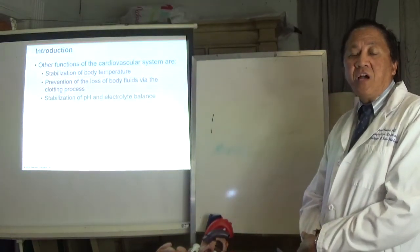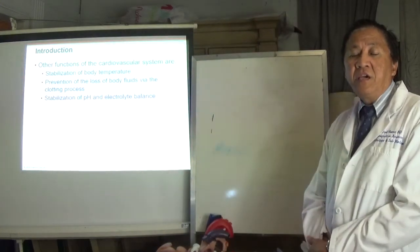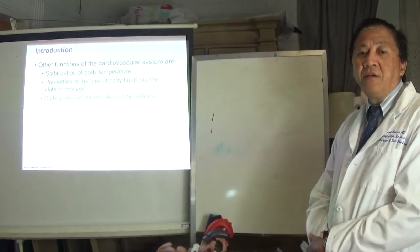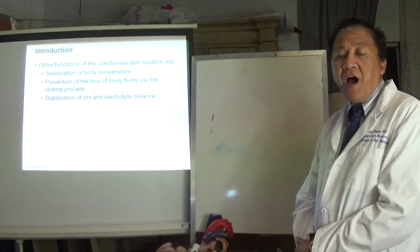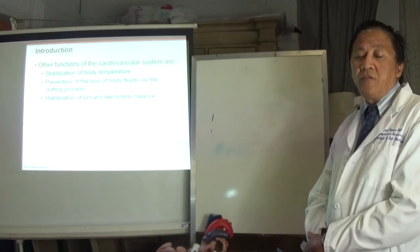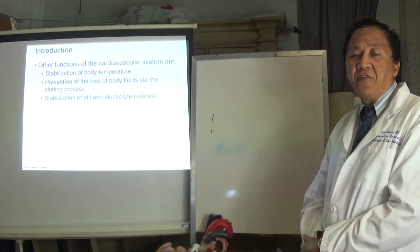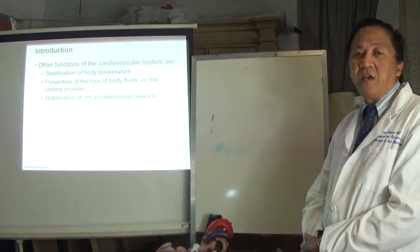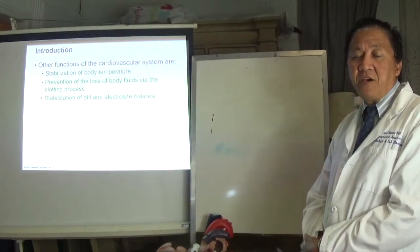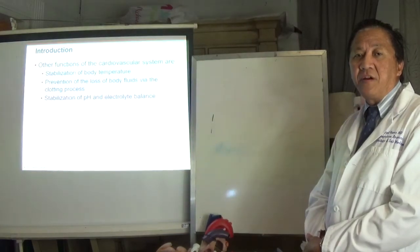For potassium, it should range between 3.5 to 5 milliequivalents per liter. Anything below 3.5 is hypokalemia and anything above 5 is hyperkalemia. Sodium ranges from 135 to 145 milliequivalents per liter; anything below 135 is hyponatremia and anything above 145 is hypernatremia.